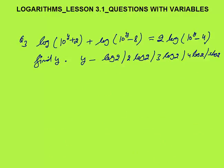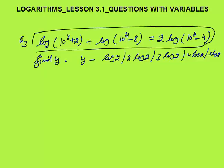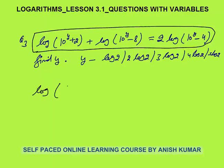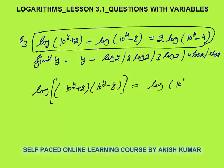Question 3: a left-hand side equals right-hand side equation is given and you need to find the value of y. No need to go by options; simply use concepts. Log a + log b = log(a × b), so the left side becomes log[(10^(y+2)) × (10^(y−8))]. This multiplies to log[(10^(y+2))(10^(y−8))]. The right side is log(10^(y−4))².